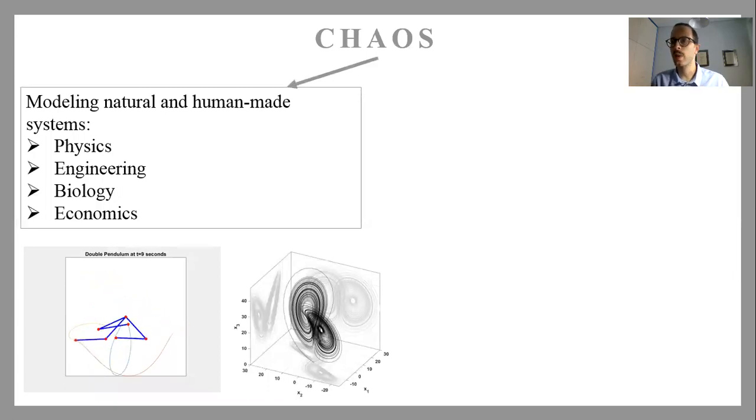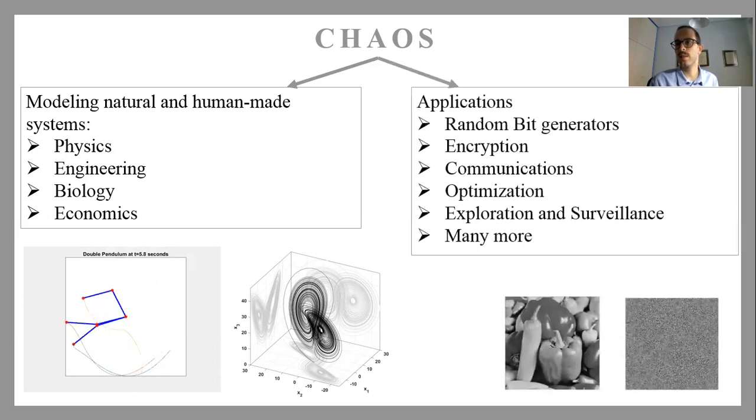So a big aspect of chaos is the modeling of physical systems, but also a secondary topic where chaos theory is applied is a very large number of applications. For example, pseudorandom bit generators, encryption, communications, optimization, exploration, surveillance. Overall, chaos theory in the modeling and application aspect is a very big area with very active research at the moment.